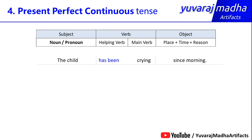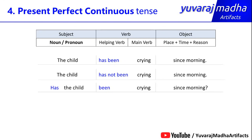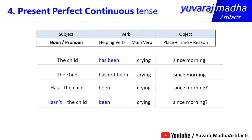Another example: 'The child has been crying since morning.' Negative: 'The child has not been crying since morning.' Interrogative: 'Has the child been crying since morning?' Negative interrogative: 'Hasn't the child been crying since morning?' Also: 'The child has been crying for half an hour.'